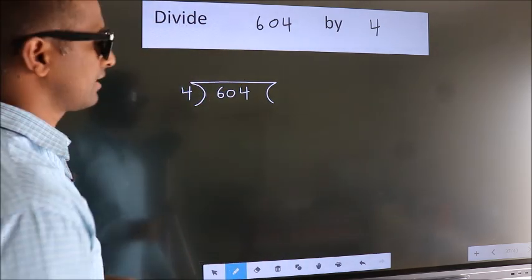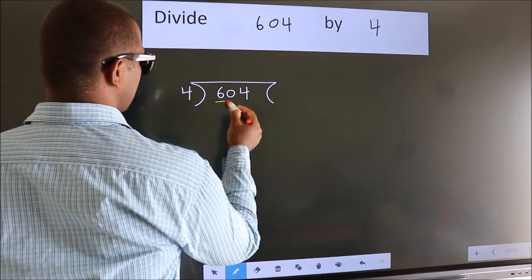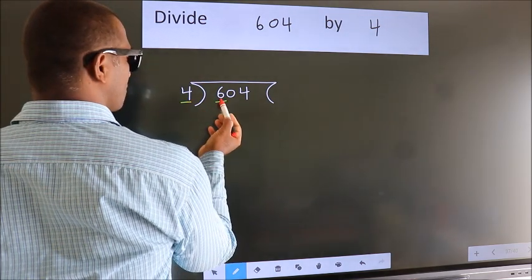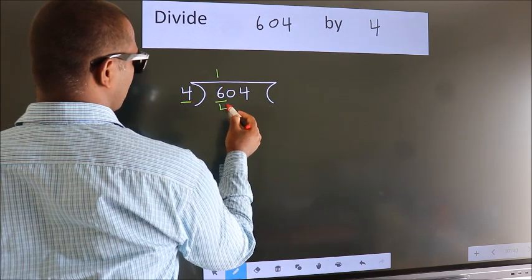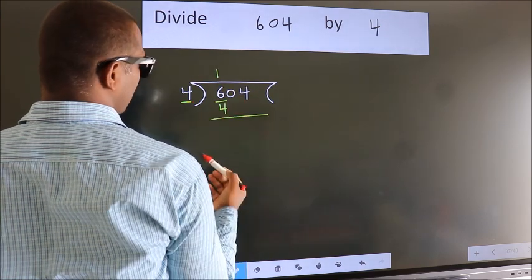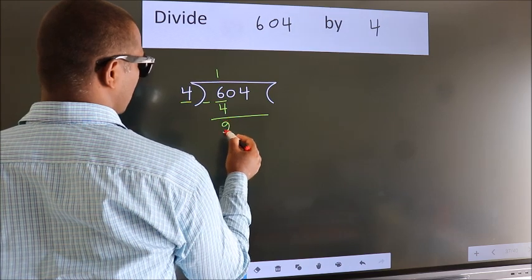Next, here we have 6, here 4. A number close to 6 in 4 table is 4 once 4. Now we should subtract. We get 2.